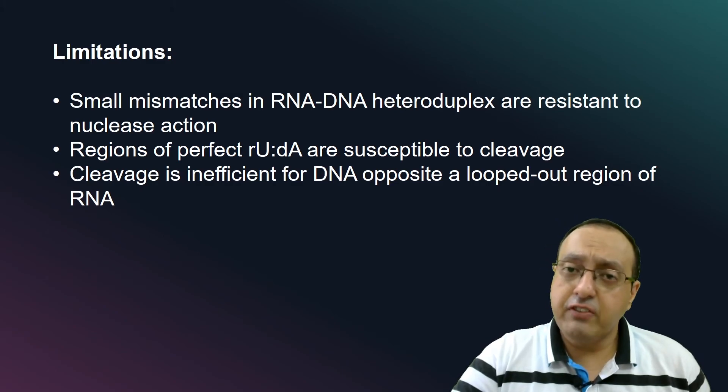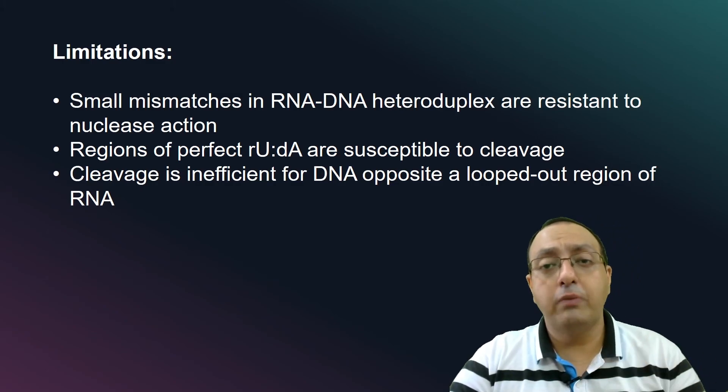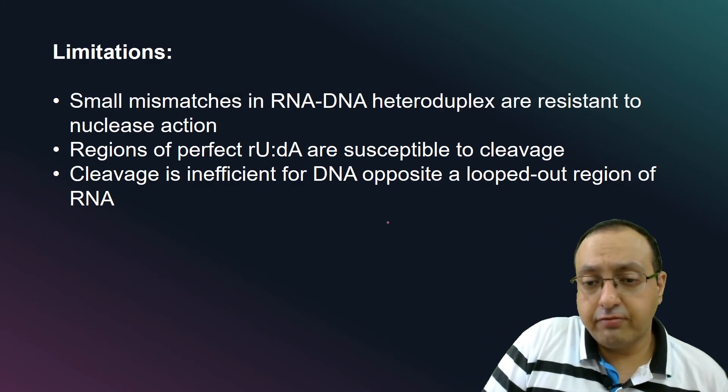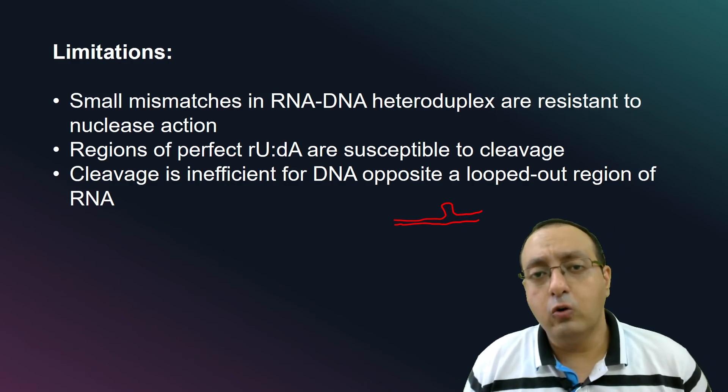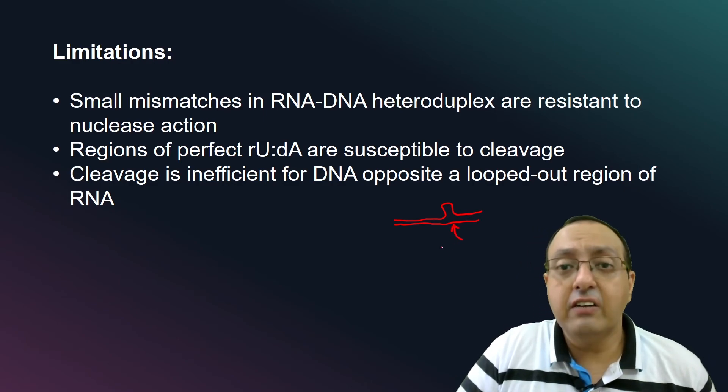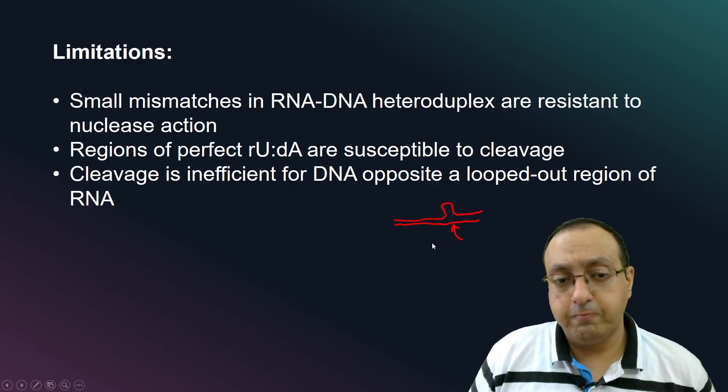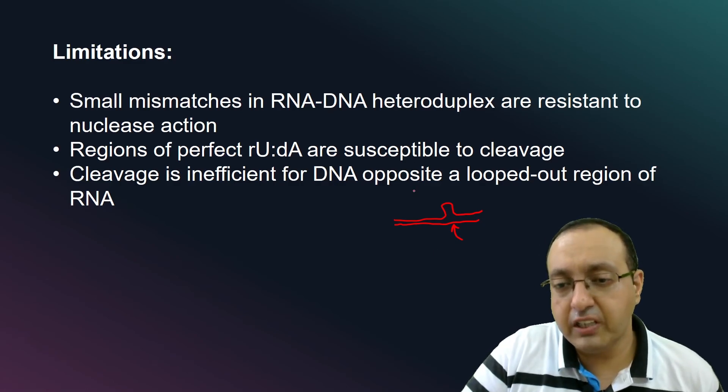And cleavage is inefficient for DNA opposite a looped-out region of RNA. So if we have a DNA, it is hybridizing to RNA, and for example, there is a small looped-out region here, the cleavage is pretty inefficient. Cleavage is pretty inefficient.